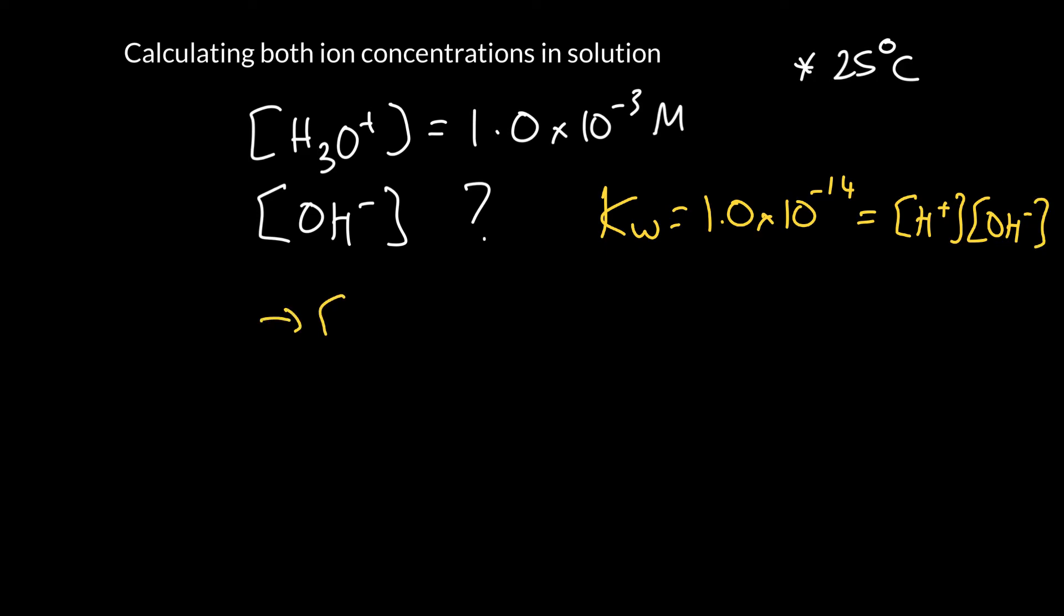So if we want to find the concentration of OH minus, we just rearrange. So it is Kw over the concentration of H plus. And at this point here, we can plug in the value. So 1 times 10 to the minus 14 over, what are we given? 1 times 10 to the minus 3.